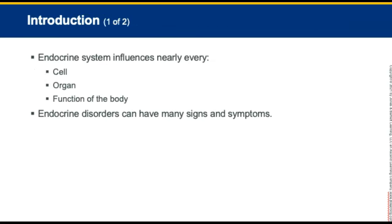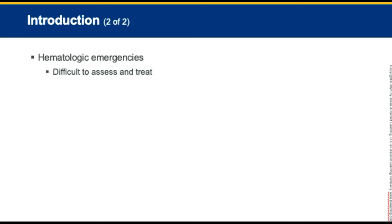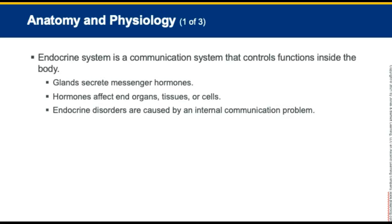The endocrine system directly or indirectly influences nearly every cell, organ, and function of the body, and endocrine disorders are often seen with a multitude of signs and symptoms. Hematologic emergencies are difficult to assess and treat in the pre-hospital setting. The endocrine system is a communication system that controls functions inside the body. Endocrine glands secrete messenger hormones which travel through the blood to end organs, tissues, or cells that they affect. Endocrine disorders are caused by an internal communication problem. If a gland is not functioning normally, it may produce more hormones — hypersecretion — or not enough hormones — hyposecretion. A gland may be functioning correctly, but the receiving organ may not be responding.